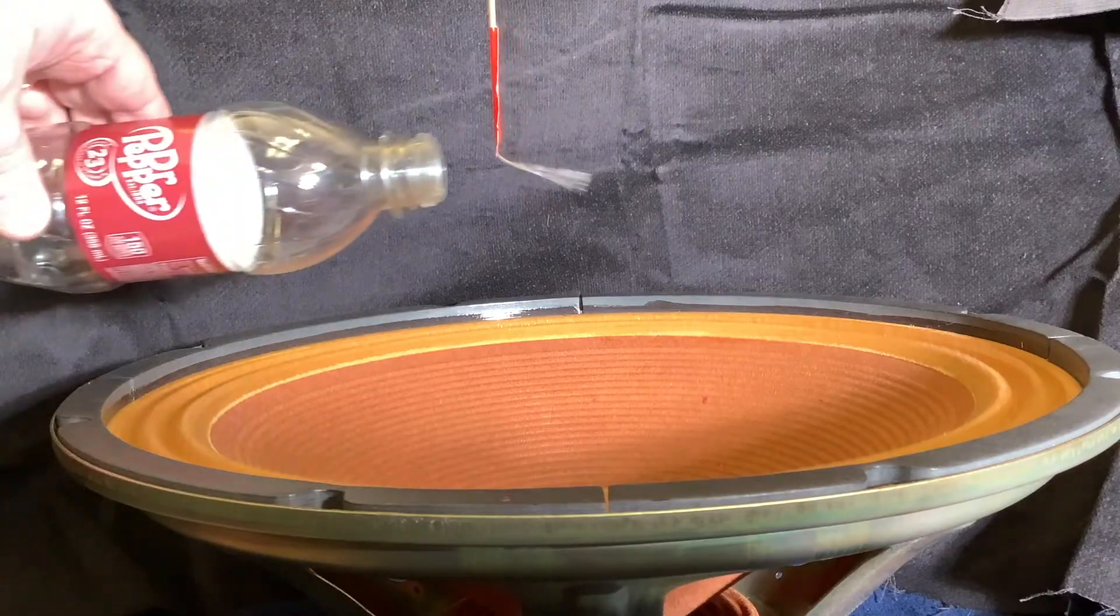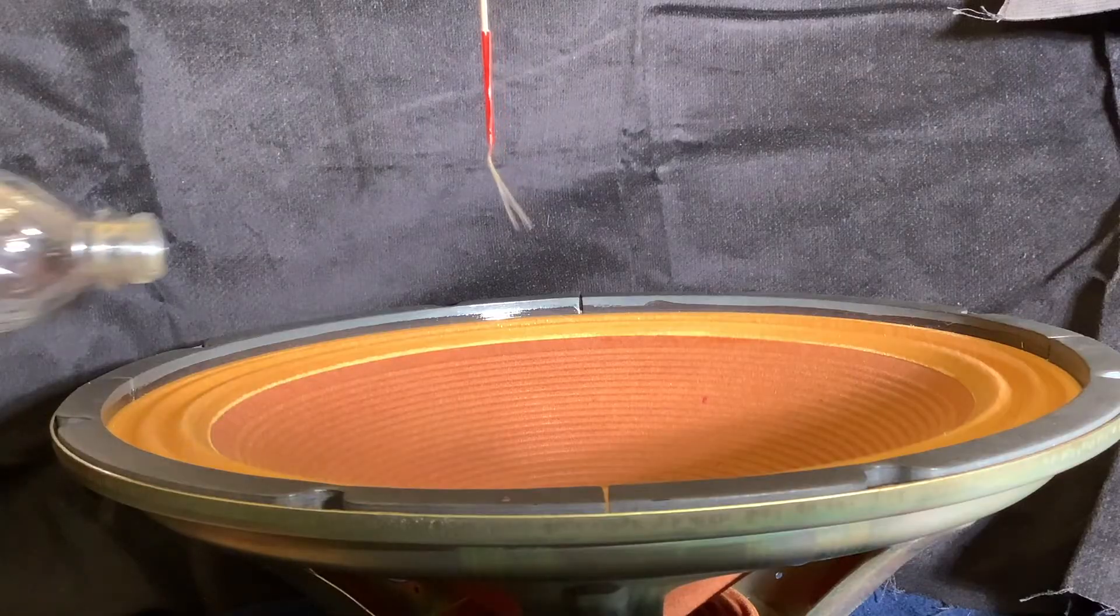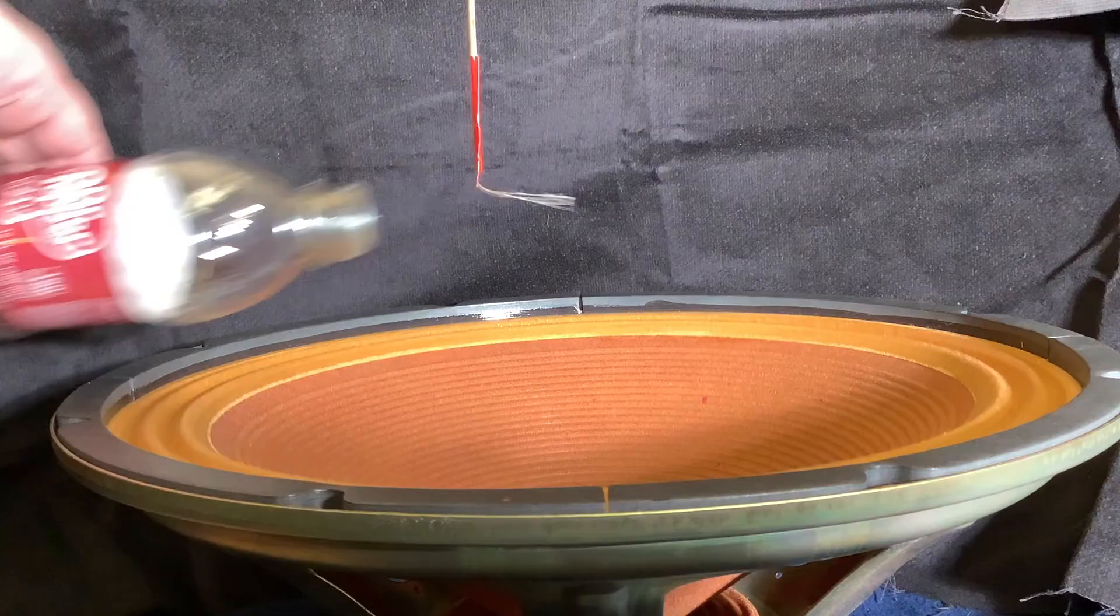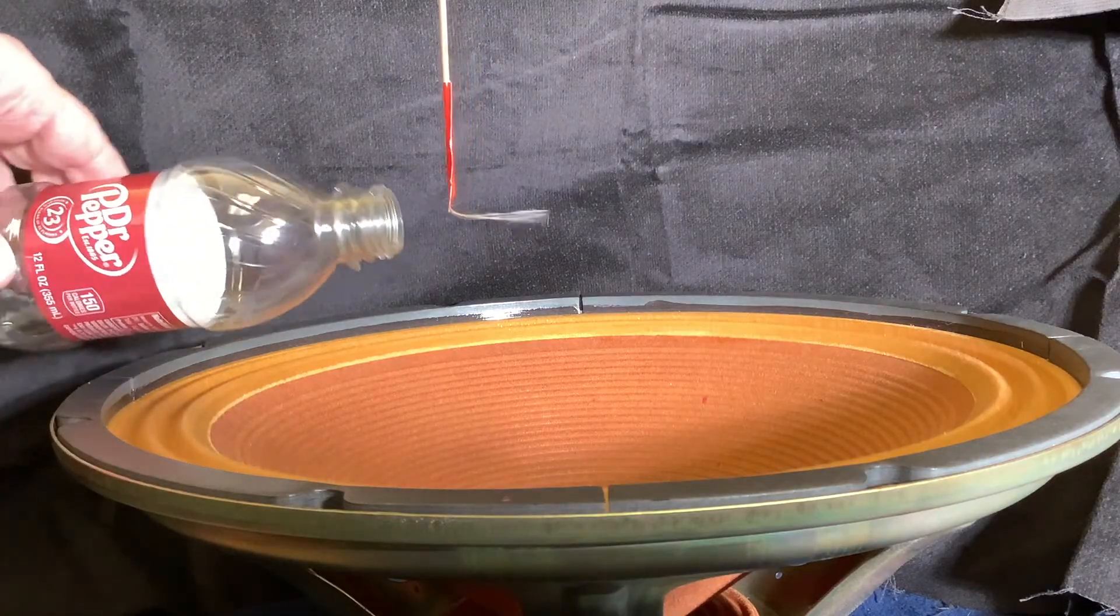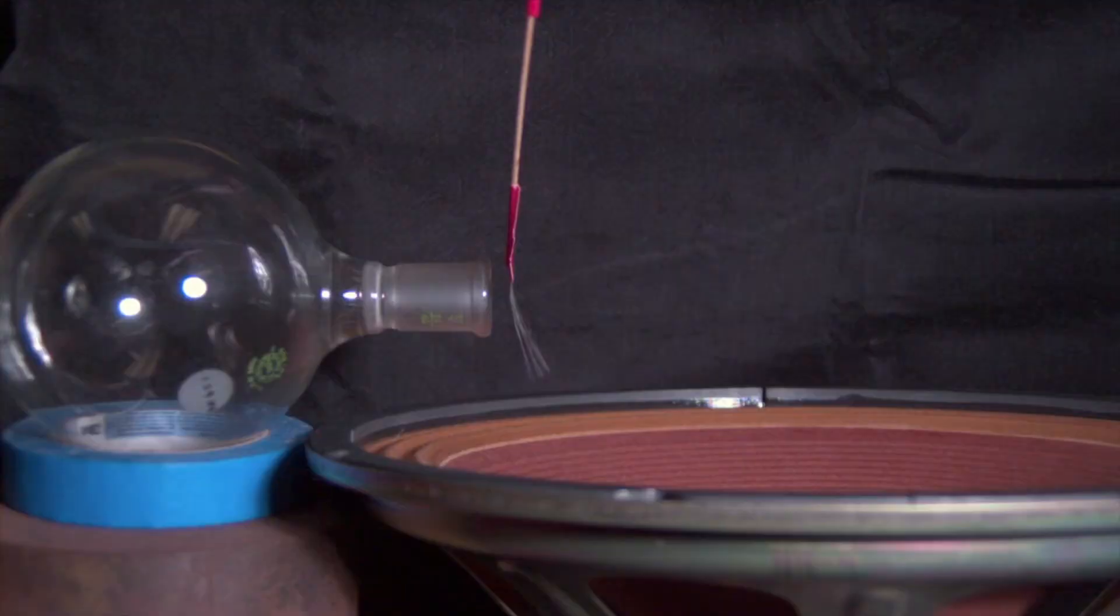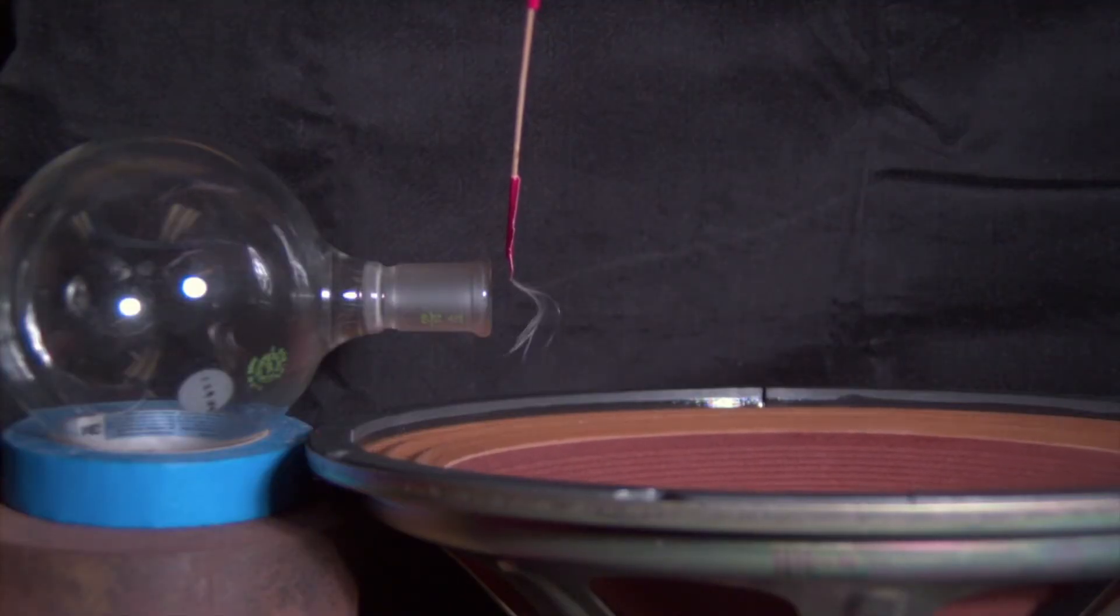Another way to observe the jet plume exiting the mouth of the resonator is to attach some thin thread fibers to the end of a stick and place them near the resonator mouth. Here we can see the 256 hertz pop bottle blow the threads away from its mouth opening. At a thousand frames per second, you can see the threads begin to pulse as the amplitude of the driving sound is increased and the jet is formed, and the threads are blown away vigorously from the mouth opening.